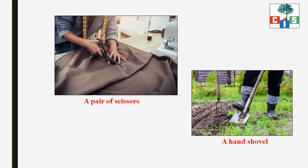Here you can see in the pictures the people doing one kind of work. The first picture is of a tailor — a man who is cutting the cloth. In the second picture, you can see it is a gardener who is trying to remove the weeds or unwanted plants from the garden. While doing this work, they are each using one tool. The tailor is using a pair of scissors to cut the cloth. The gardener is using a hand shovel to remove the weeds.